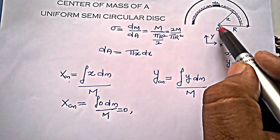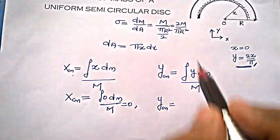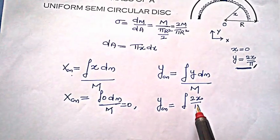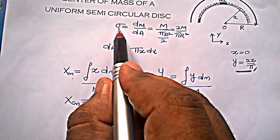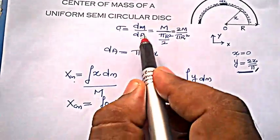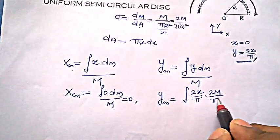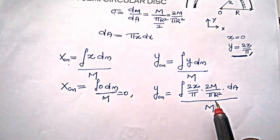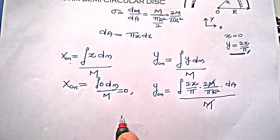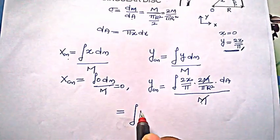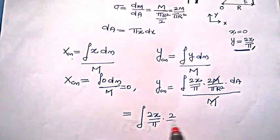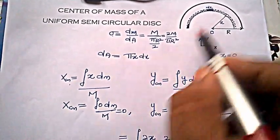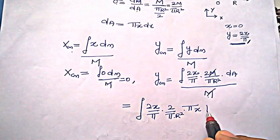By symmetry, the center of mass lies on the y axis. So ycm = ∫y dm / total mass = ∫(2x/π) dm. Now sigma = dm/dA, so dm = sigma · dA = (2m/πr²) dA. Substituting, ycm = ∫(2x/π) · (2m/πr²) dA over the entire mass. Since m cancels, we get the integral of (2x/π) · (2/πr²) · dA, where dA = πx dx.